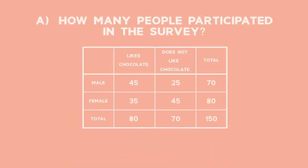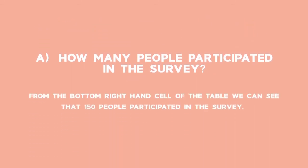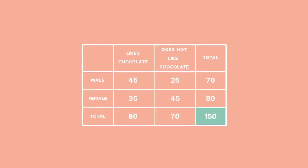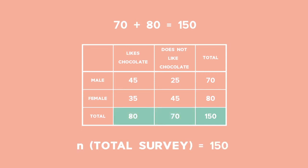In part A, we are asked how many people participated in the survey. The number in the bottom right-hand corner gives us the total. So 150 people participated in the survey. 150 is the sum of 70 and 80, and 150 is also the sum of 80 and 70.